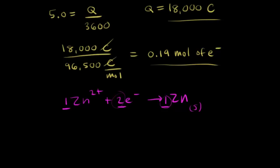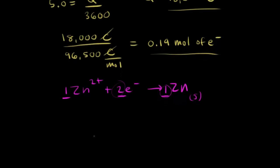Let's set up a proportion to figure out how many moles of zinc are produced. We'll put electrons over solid zinc. We have a mole ratio of two to one. Our mole ratio is two to one.